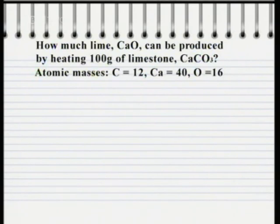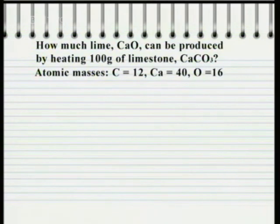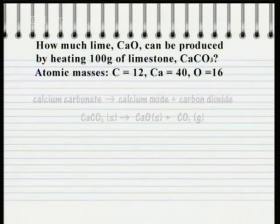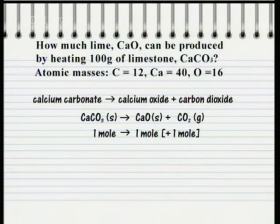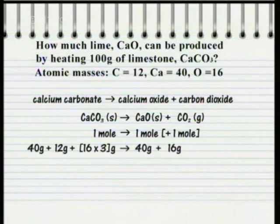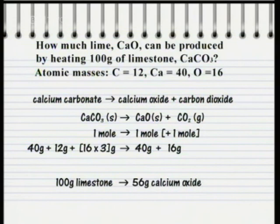Sample question: how much lime (calcium oxide, CaO) can be produced by heating 100 grams of limestone (CaCO₃)? Relative atomic masses: calcium = 40, carbon = 12, oxygen = 16. The balanced equation is: CaCO₃ → CaO + CO₂. One mole of limestone gives one mole of calcium oxide. Converting to grams: limestone weighs 40 + 12 + (16×3) = 100 grams per mole, and lime weighs 40 + 16 = 56 grams per mole. Therefore, 100 grams of limestone produces 56 grams of lime.